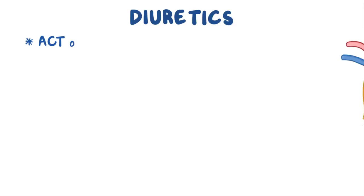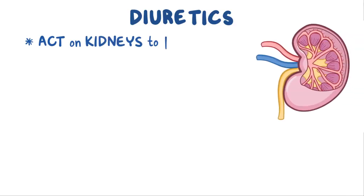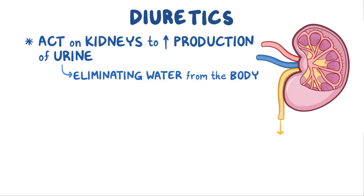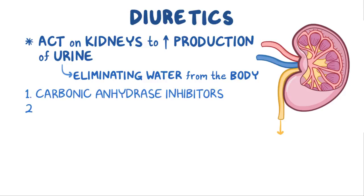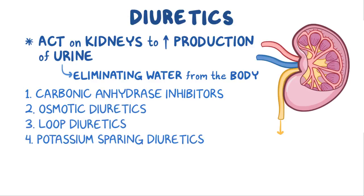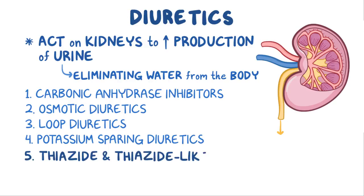Diuretics are medications that act on the kidneys to increase production of urine, and therefore elimination of water from the body. There are five main types of diuretics: carbonic anhydrase inhibitors, osmotic diuretics, loop diuretics, potassium sparing diuretics, and thiazide and thiazide-like diuretics, which we'll get intimately acquainted with during this video.